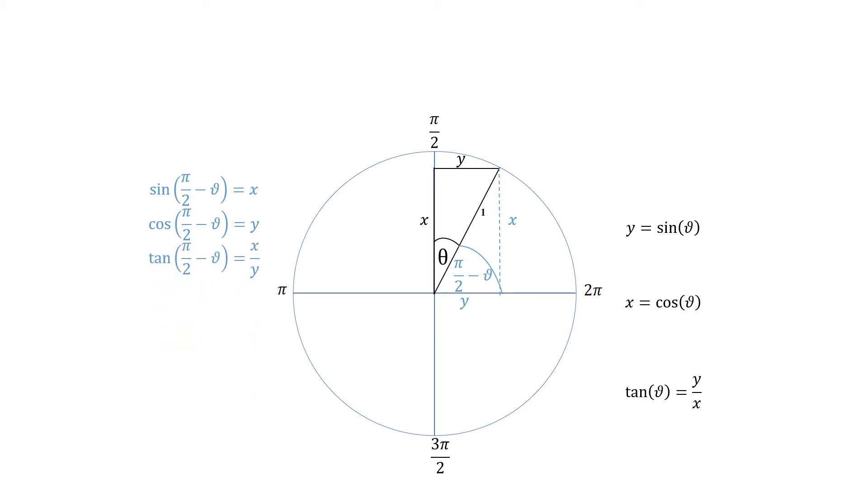And tan of π/2 minus theta is going to be sine of π/2 minus theta over cos of π/2 minus theta, so x on y. So now we can see that sine of π/2 minus theta is equal to cos of theta. And cos of π/2 minus theta is equal to sine of theta. These are our complementary angles.